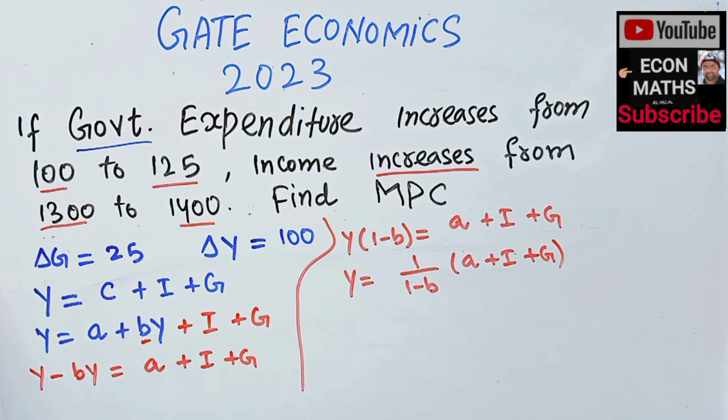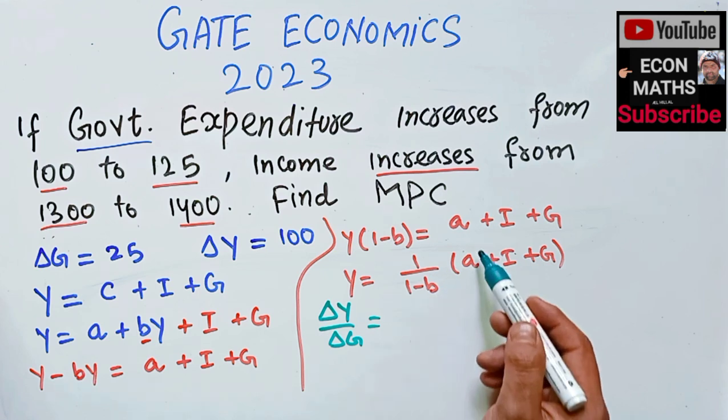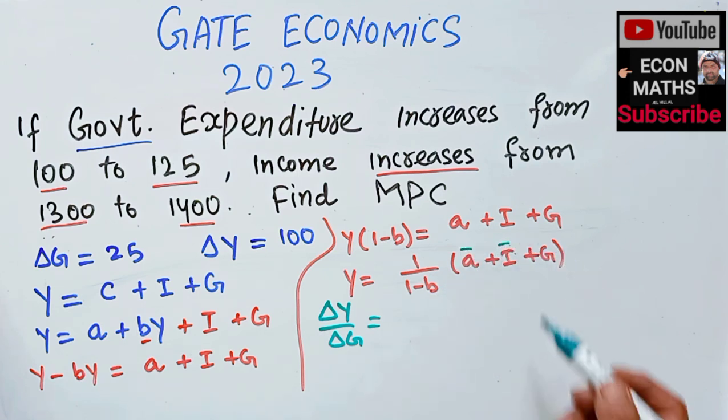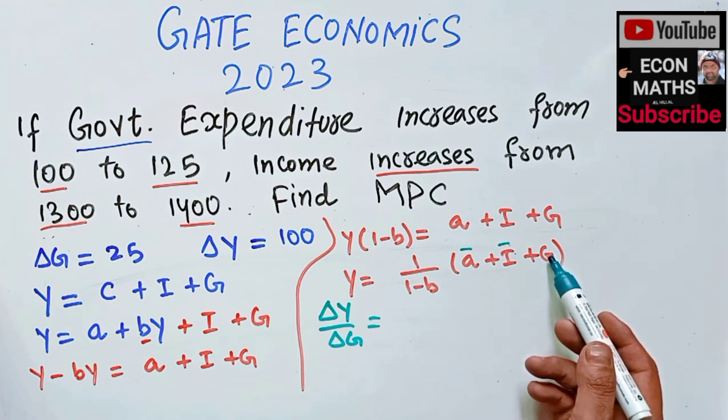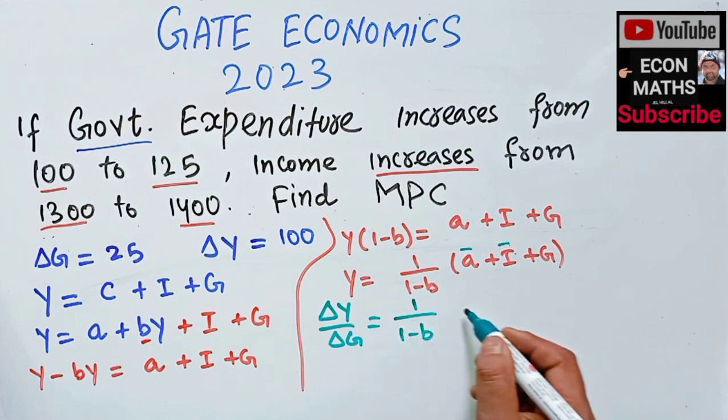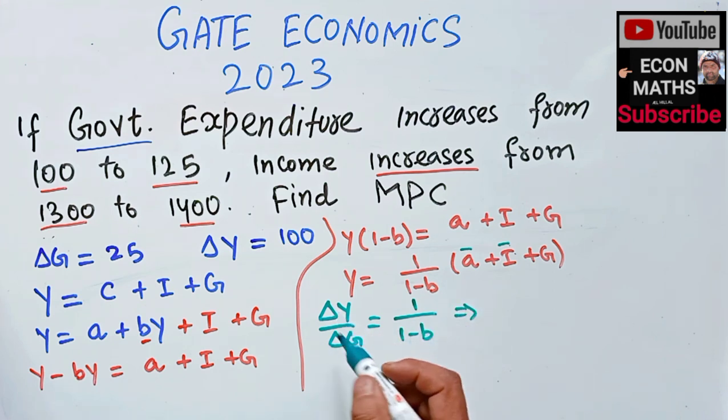We need to find the MPC, so let's take the derivative of Y with respect to G. Del Y upon del G: the derivative of A is 0, derivative of I is 0, and the derivative of G is 1. So we're left with 1 over (1 minus B).